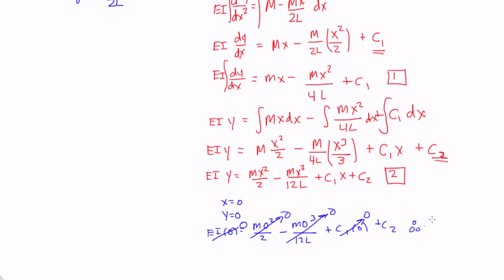So therefore C2 is equal to 0. Cool. Now we need one more boundary condition to figure out what C1 is.